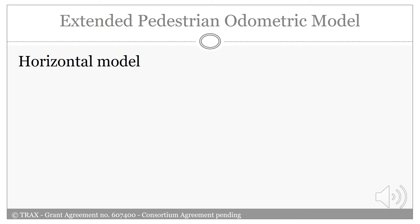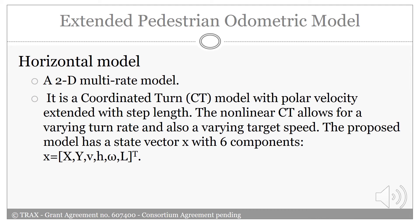The second extended pedestrian odometric model is the horizontal model. It's a 2D multi-rate model. The motion model is the coordinated turn model with a polar velocity extended with step lengths. The non-linear coordinated turn allows for a varying turn rate and also varying target speed. The proposed model has a state with six components: X position, Y position, velocity, heading, angular velocity, and step length.